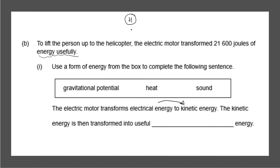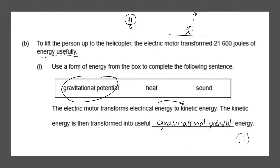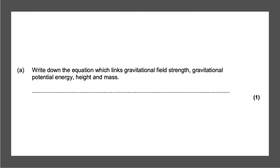The kinetic energy is then transformed into useful gravitational potential energy, because the helicopter is lifting the person upwards, so their gravitational potential energy is going to increase. Heat energy and sound energy are also released, but these are wasted. The answer is gravitational potential energy, and that will give us one mark.